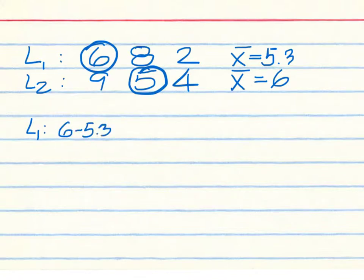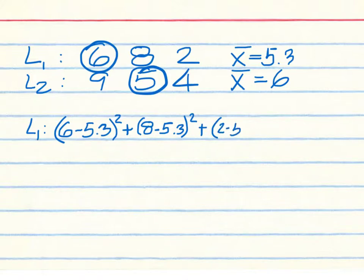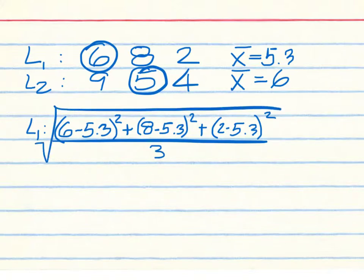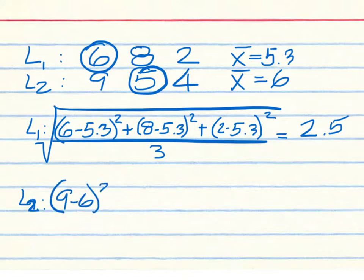For the standard deviation of List 1: take 6 minus 5.3 and square that, 8 minus 5.3 and square that, and 2 minus 5.3 and square that. Divide everything by 3 and find the square root. List 1 standard deviation is 2.5. Now for List 2 standard deviation: 9 minus 6, square it.